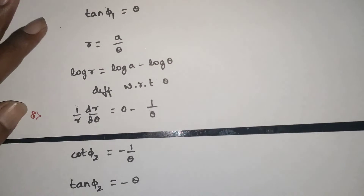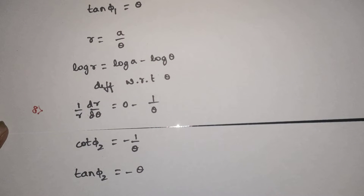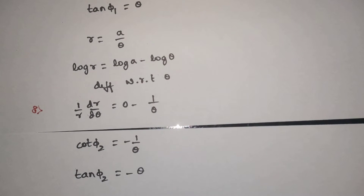Therefore, tan φ₂ is equal to minus theta.